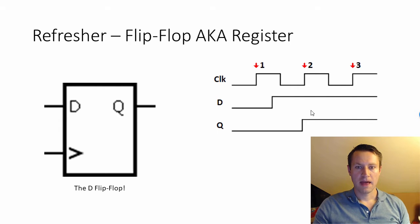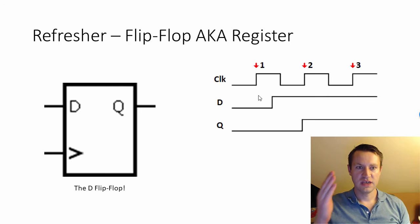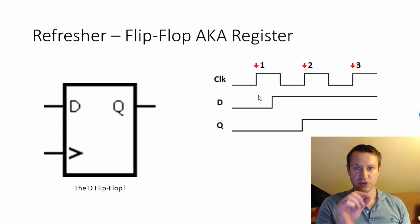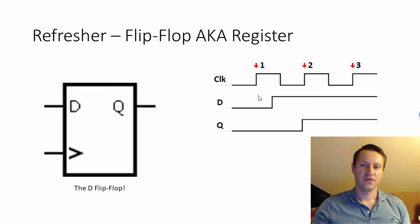The issues we're going to talk about are basically what happens when D moves — like when this transition on D is really close to the rising edge of the clock. If you think about it, the flip-flop needs to see a voltage on the input of D. And if that voltage is in the process of rising or falling, is it a high? Is it a low? Is it somewhere between the two? This is the topic of consideration here.